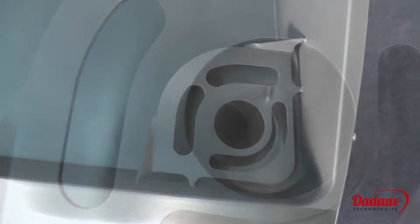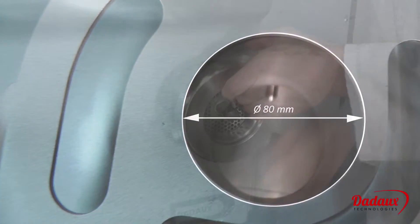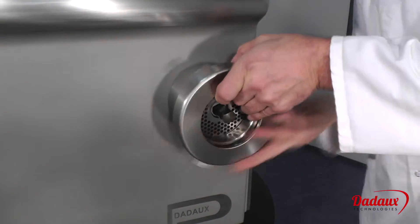The meat feed hall has a diameter of 80 mm, allowing large pieces of meat to pass through. Removal is easy.